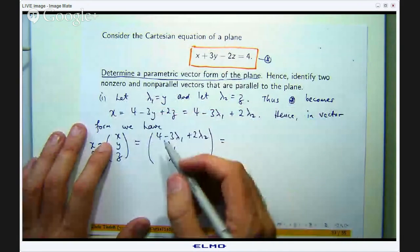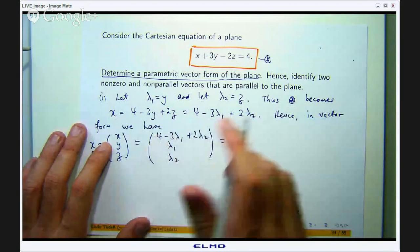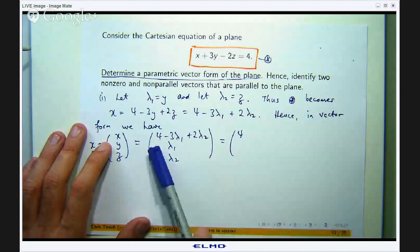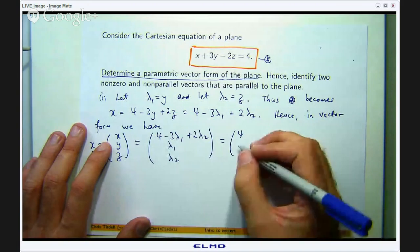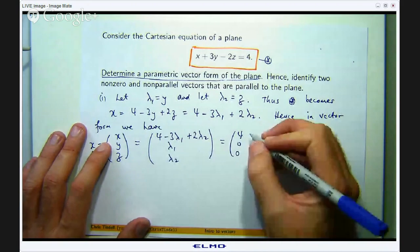So the first thing I am going to do is look for all the constants in each component. So if I look in the first component, I have got a 4. In the second component, I have got no constants. And in the third component, I have got no constants. And write that as a vector.